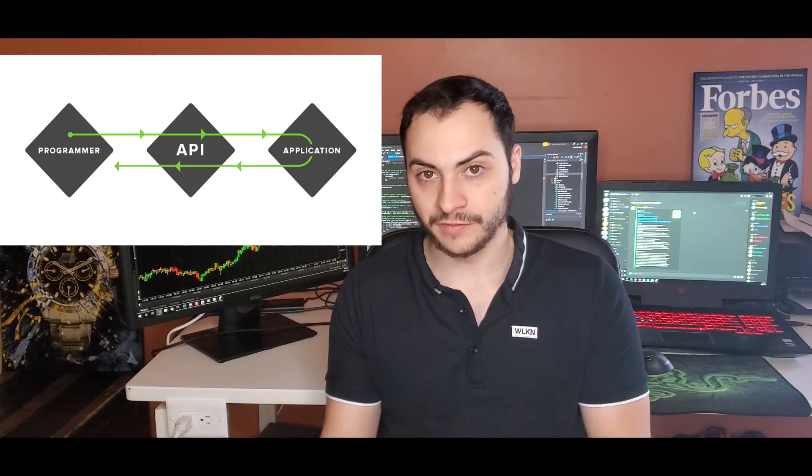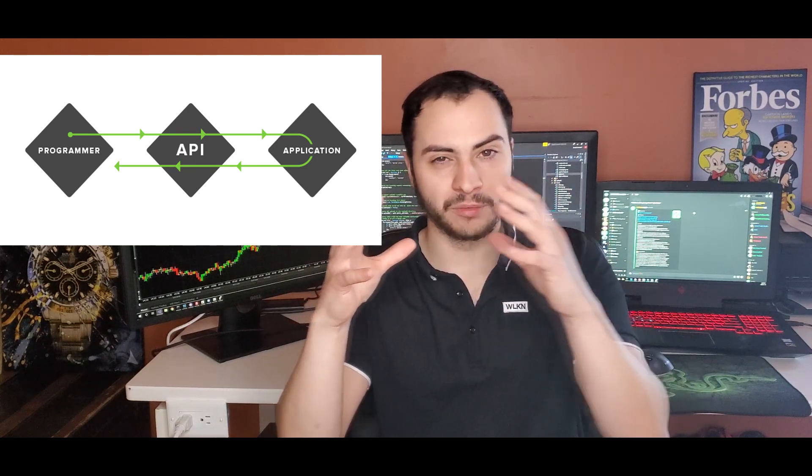Number two: say you know how to code, or maybe you're learning — the next step is you're going to have to find a broker to execute your trades on and use an API to do that. A broker basically allows you to put your money in and trade some type of security — it could be a stock, could be cryptocurrency, whatever the asset may be. You'll need some type of broker, and then you'll need an API — Application Programmer Interface — which basically facilitates talking with that broker to execute trades.